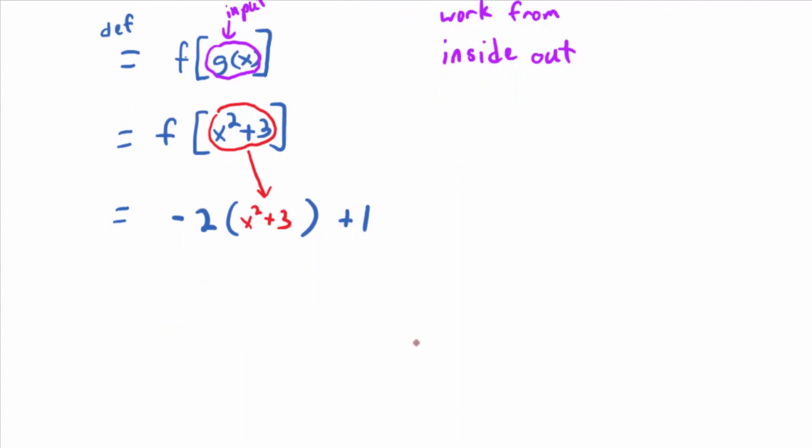So, instead of negative 2x plus 1, write it negative 2 times parentheses plus 1. And in that set of parentheses, plug in the new input, x squared plus 3. So, how do I simplify that? What could I do? Distribute the negative 2? So, what does that give me? Negative 2x squared minus 6 plus 1. What does that turn out to be? Negative 2x squared minus 5. There you go.